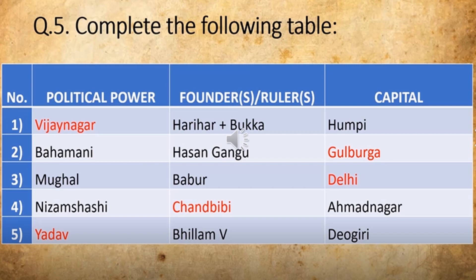Let's take one more — that is the Mughal power. Here you are going to get options like: Babur, Chandbibi, Aurangzeb. You are going to click at that one — Babur. Now the capital of Mughal power was Delhi. You will get options: Delhi, Ahmadnagar, Devgiri. You are going to click here at the right option.